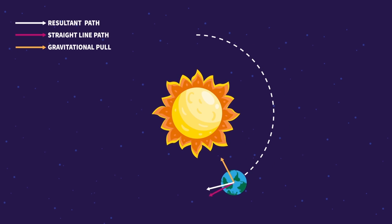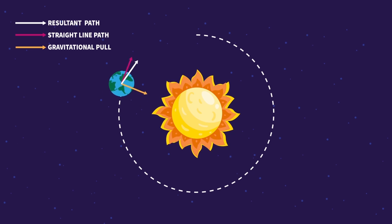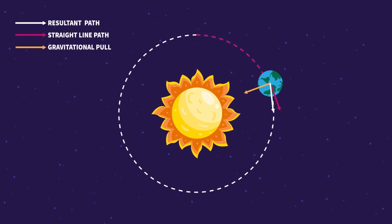With the Sun's gravitational force of attraction, the Earth is constantly attracted towards the Sun, but because it is moving with a constant velocity, it keeps on revolving around the Sun.